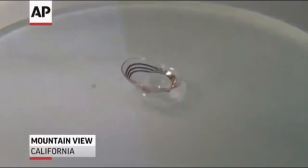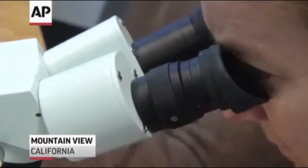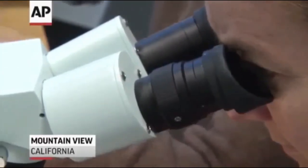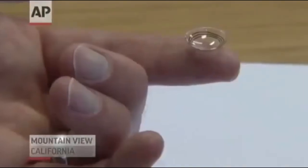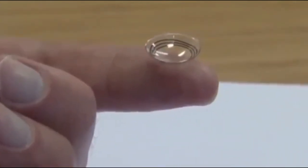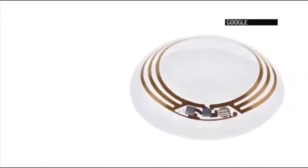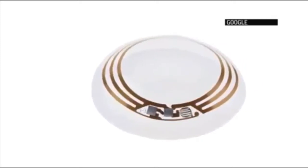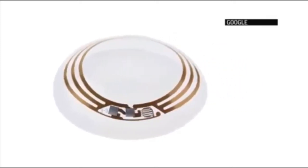The contact lens measures the glucose level in tears using a tiny wireless chip and a miniaturized glucose sensor. This prototype looks and feels like a regular soft contact lens, but inside we have a tiny chip and miniaturized glucose sensor that allows us to continually monitor tear glucose levels.